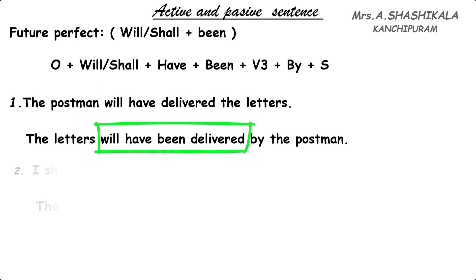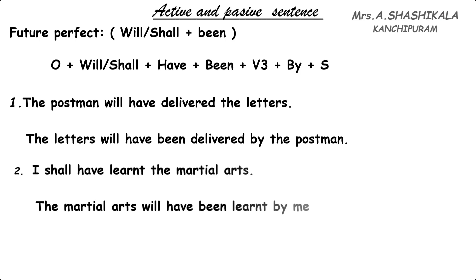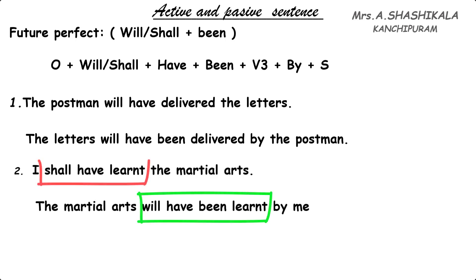See the second example: 'I shall have learnt the martial art.' We use 'shall' here because 'I' and 'we' follow 'shall'. When writing the object 'the martial art' in passive, we use 'will'. 'Shall have learnt' changes to 'will have been learnt'. The answer is: 'The martial art will have been learnt by me.'